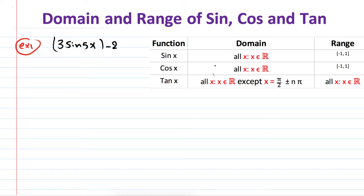For reference: the domain of sine is all real numbers and the range is between -1 and 1, inclusive. For cosine it is the same. For tangent, the domain is all real numbers except the x values where we have vertical asymptotes, which are at π/2 ± nπ, where n is a natural number. The range of tangent is all real numbers.